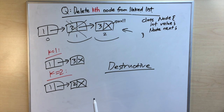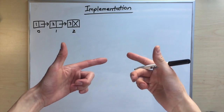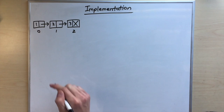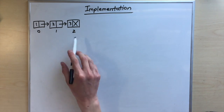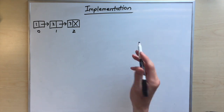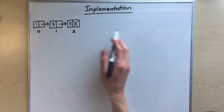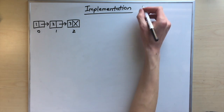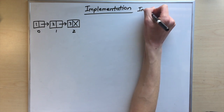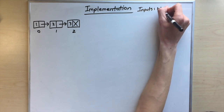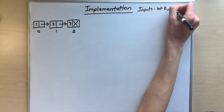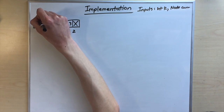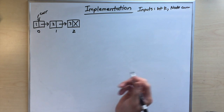Let's hop into the implementation. We'll use a linked list with three nodes already indexed. We have two inputs: int k, the position of the node to delete, and a pointer called cur which always points to the first node in our linked list.